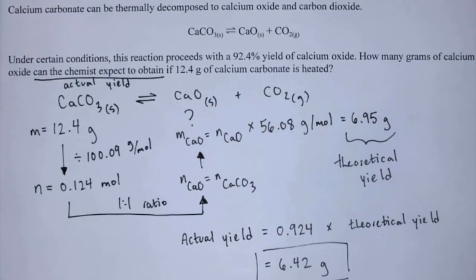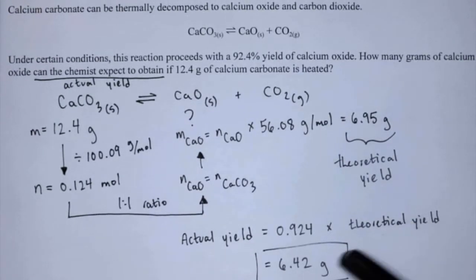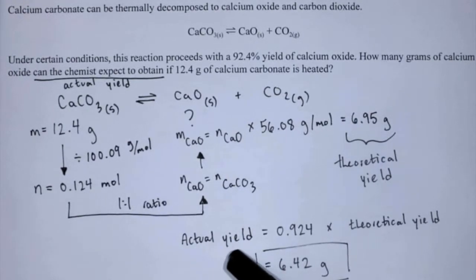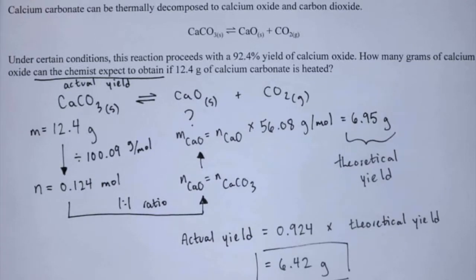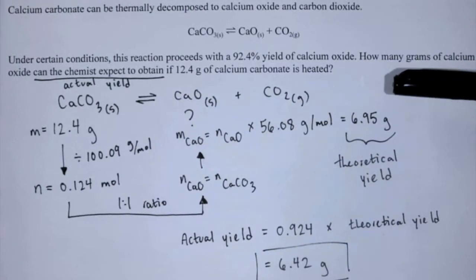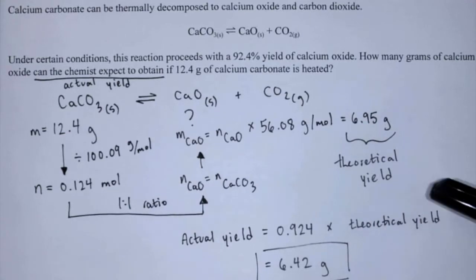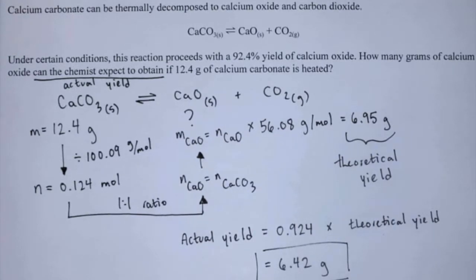A few notes: the actual yield should always be smaller than your theoretical yield. If you find the actual yield is bigger than the theoretical yield, you've done something wrong — the theoretical yield is the maximum you can expect. The actual yield assumes you'll lose some product or some reactant won't fully react. So 6.42 grams is our actual yield, 92.4% is our percent yield, and the theoretical yield is determined through stoichiometry. That's it for this video!